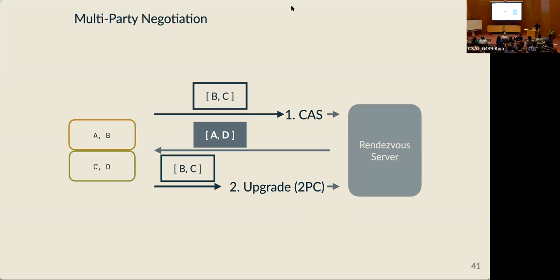The negotiation protocol extends to this case without much modification. Instead of relying on a live server to make the decision, we use a key-value store to coordinate the negotiation. When a client arrives, it picks a stack it would like to use and tries to set it as the connection's address in the key-value store. If there's already a value set, the service returns that and the set will fail. The client then has three options: apply the existing connection stack to its local channel stack and start participating, return an error to the developer, or do what we call an upgrade, where the client changes the stack via two-phase commit, ensuring all connection participants agree on the new stack before it comes into use.